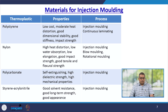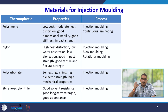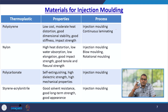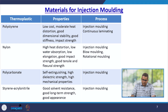Different thermoplastic materials have different properties and require different processes to get useful products. Polystyrene has low cost, moderate heat distortion, good dimensional stability, good stiffness and impact strength, and can be processed by injection moulding or continuous laminating. Nylon has high heat distortion, low water absorption, low elongation, good impact strength, good tensile and flexural strength, and can be injection moulded, blow moulded, or rotationally moulded.